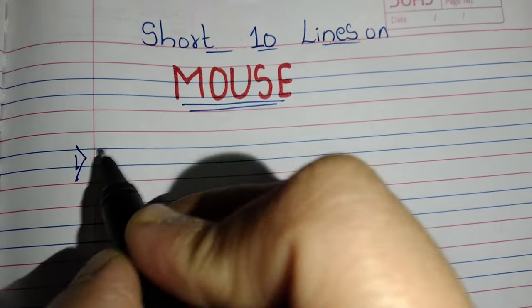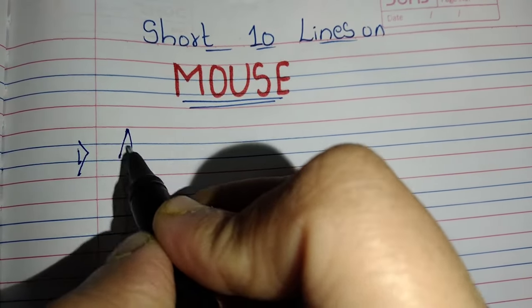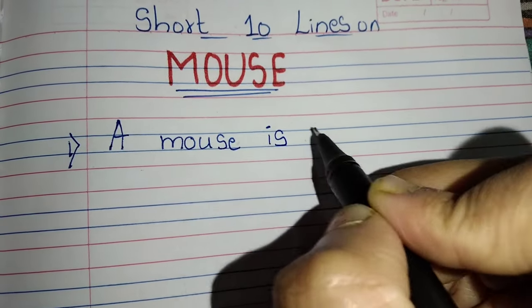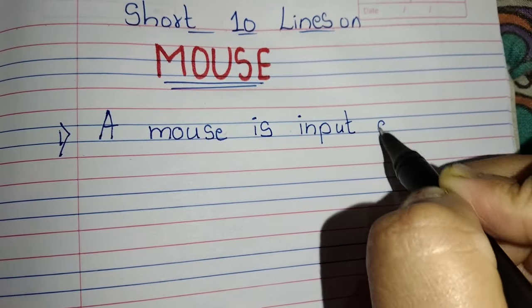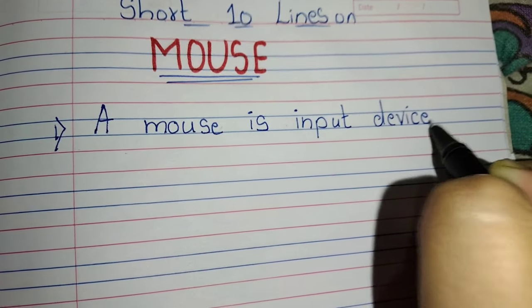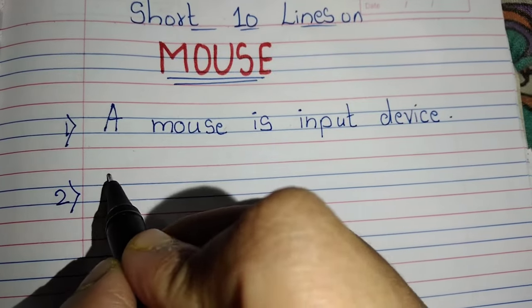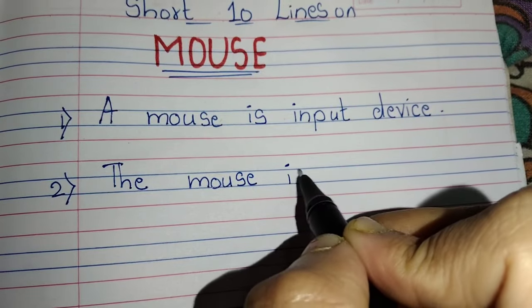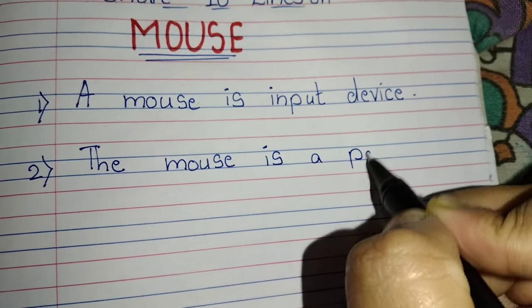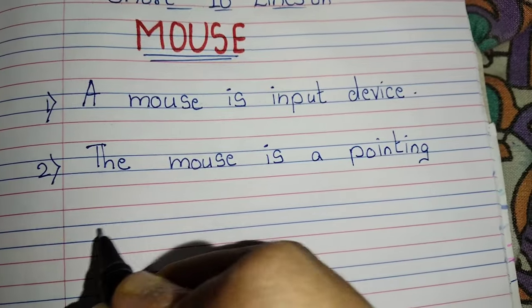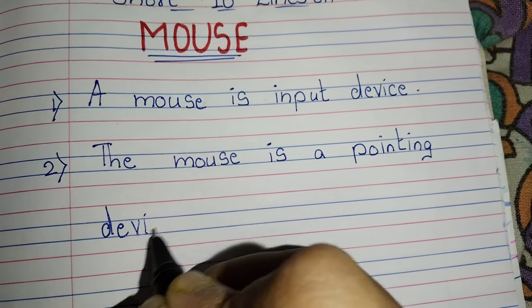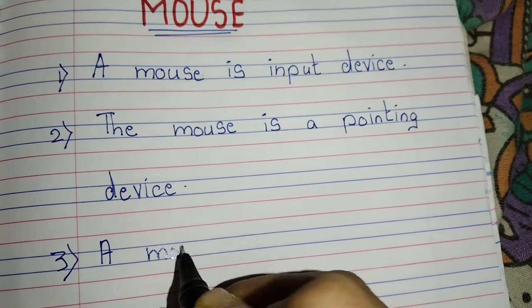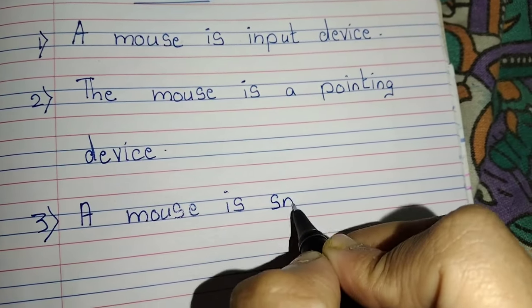Hi guys, welcome back to my channel Triyang Manmoji. Today's topic: 10 lines on computer mouse. A mouse is an input device. The mouse is a pointing device.